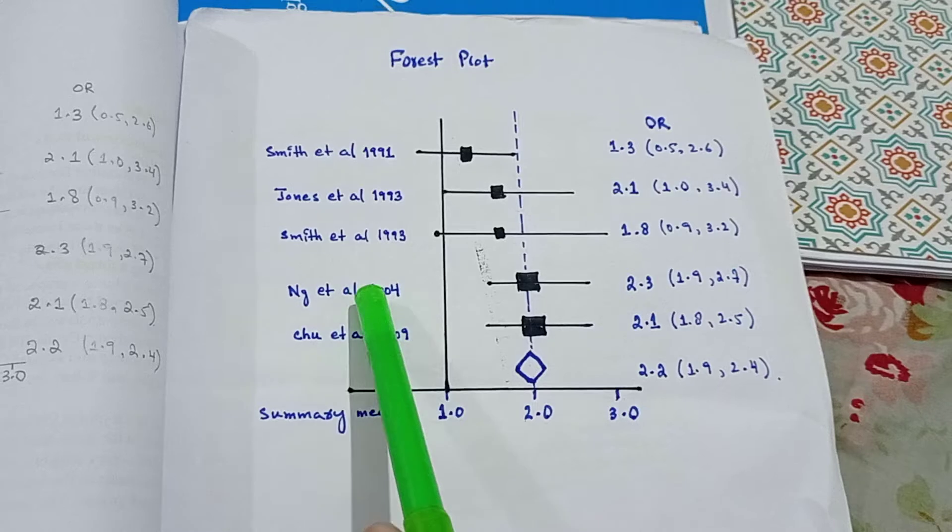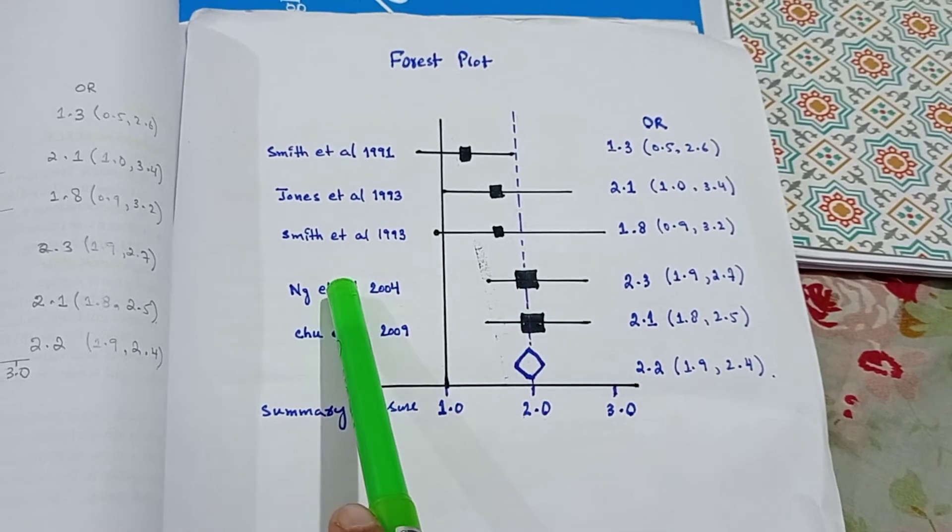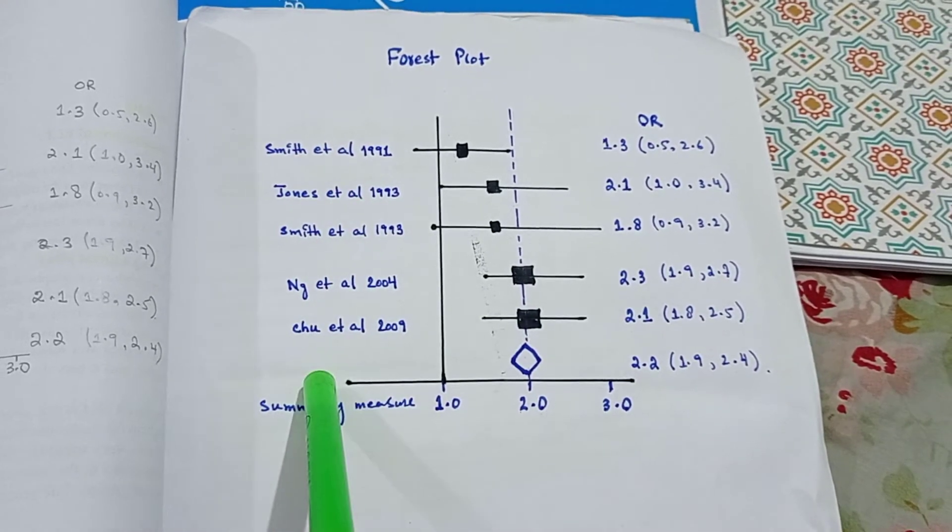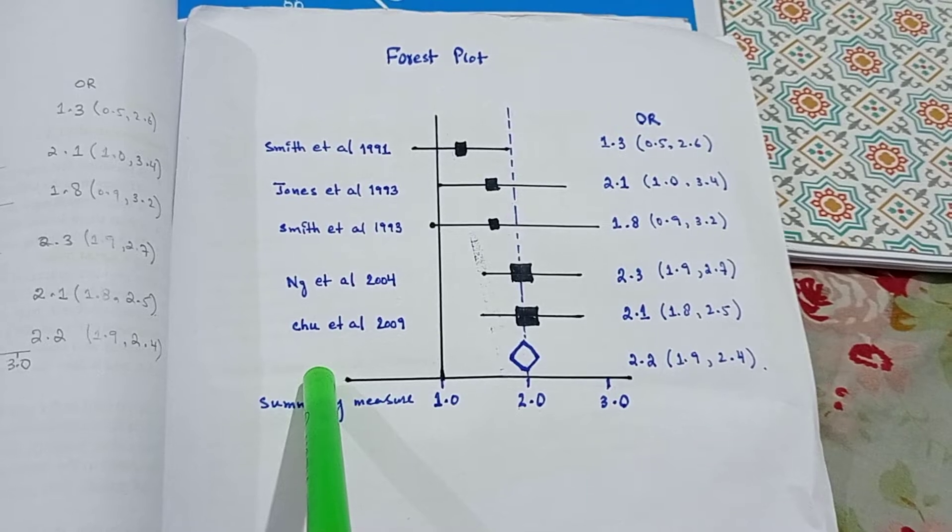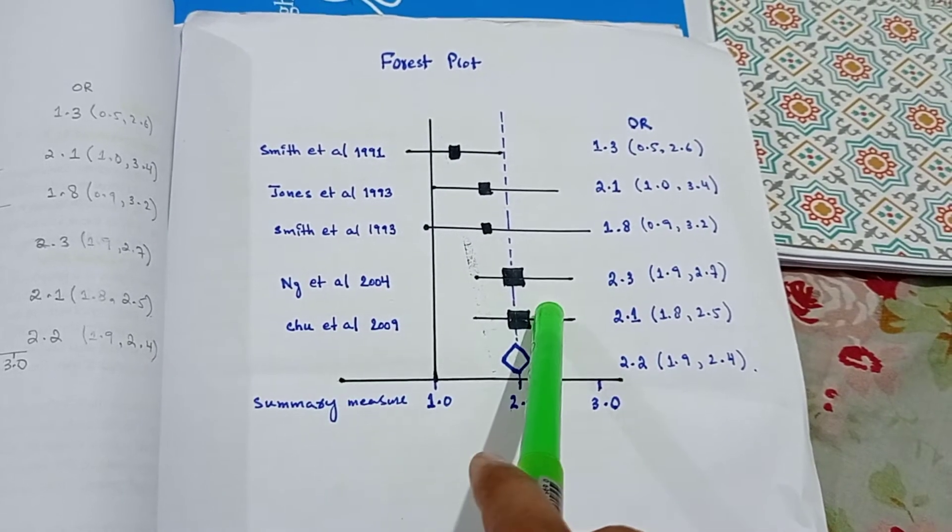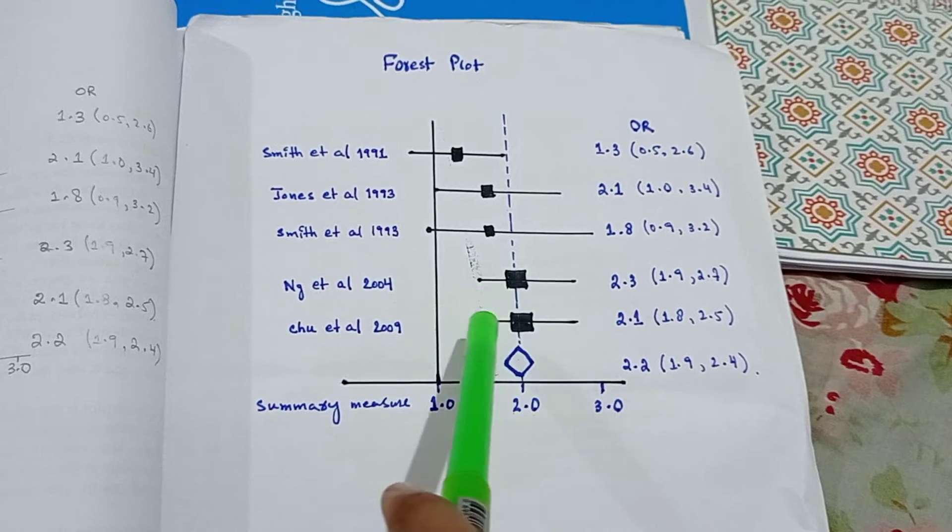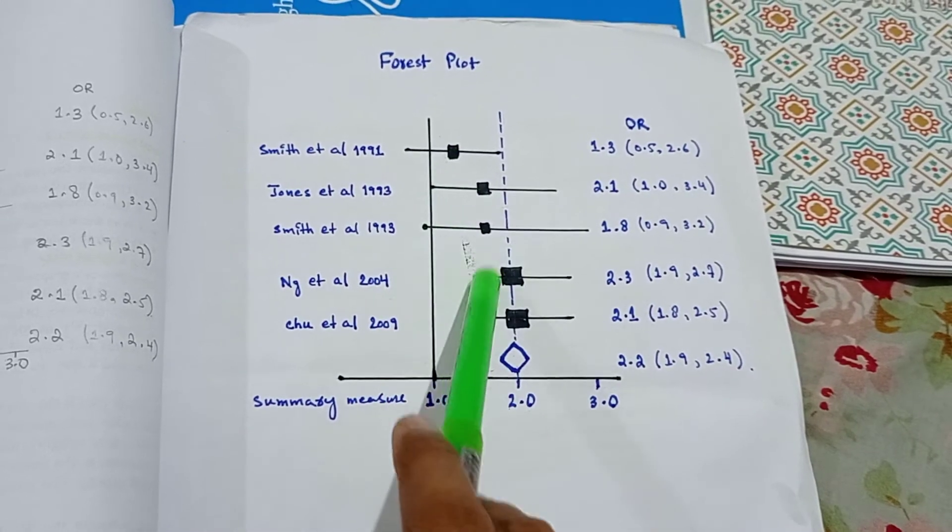There are two columns, left and right. In the left column, there are names of studies being given, which is usually in chronological order. On the right-hand side, there is a graphical representation of the measure of effect of each study.